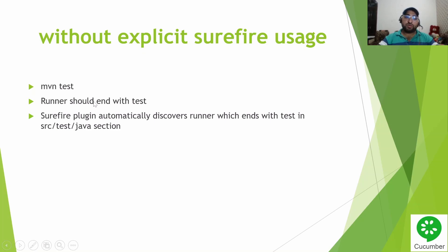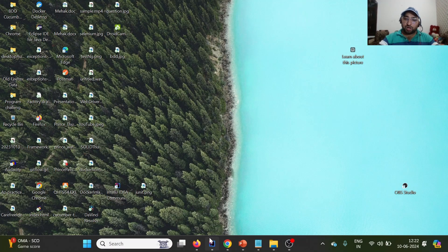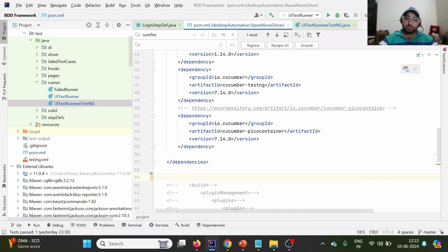In Cucumber, we execute test cases using a runner. So what we have to do is postfix 'Test' at the end of the runner class name. Let me go to the practical demonstration for this particular case.